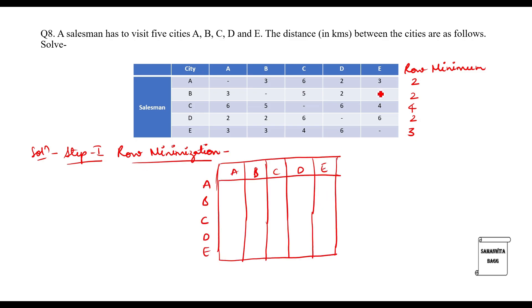We will subtract the minimum value two from each value in the respective row. The results are: one, four, zero, one, one; one, three; zero, one. Now we have at least one zero in each row.